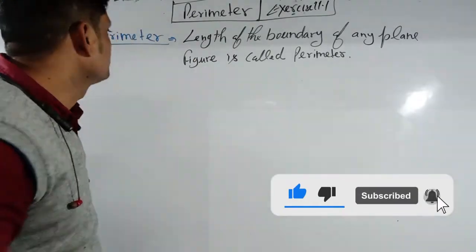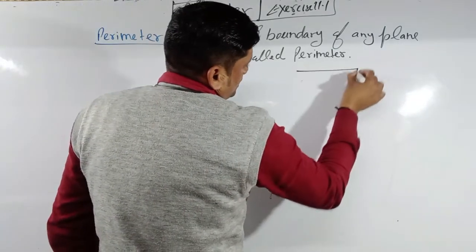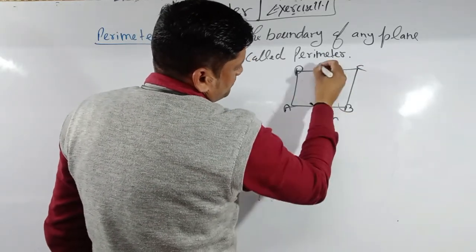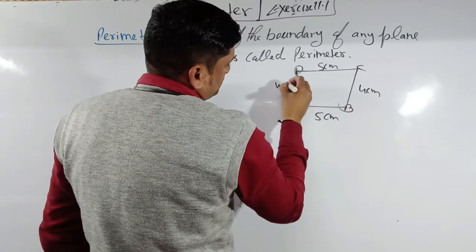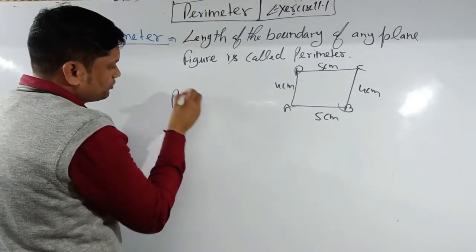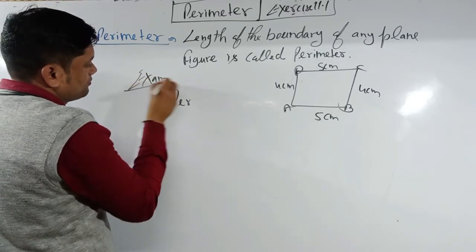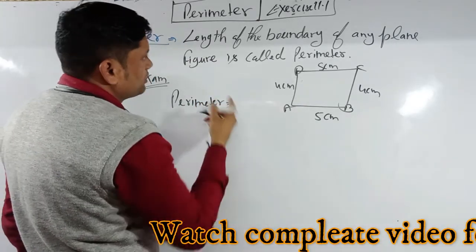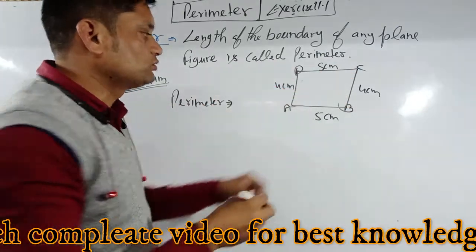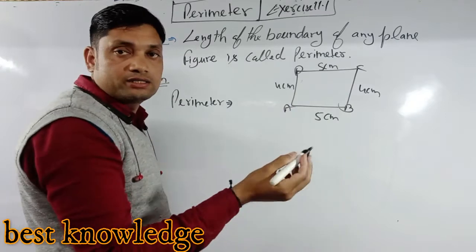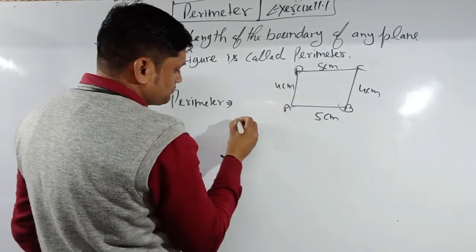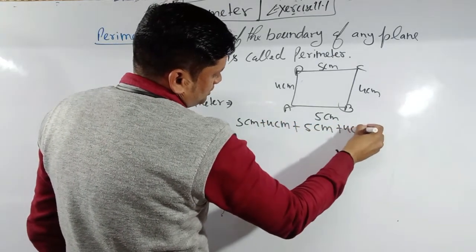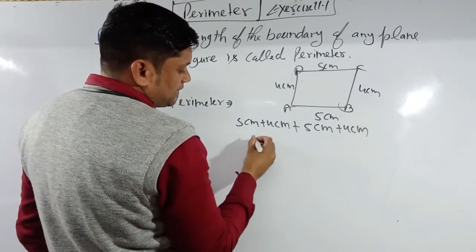First write the definition of perimeter, then draw a figure — suppose figure ABCD where sides are 5 cm, 5 cm, 4 cm, and 4 cm. Perimeter is the length of the boundary of any plane figure, or the sum of all sides. So: 5 + 4 + 5 + 4 = 18 centimeters.